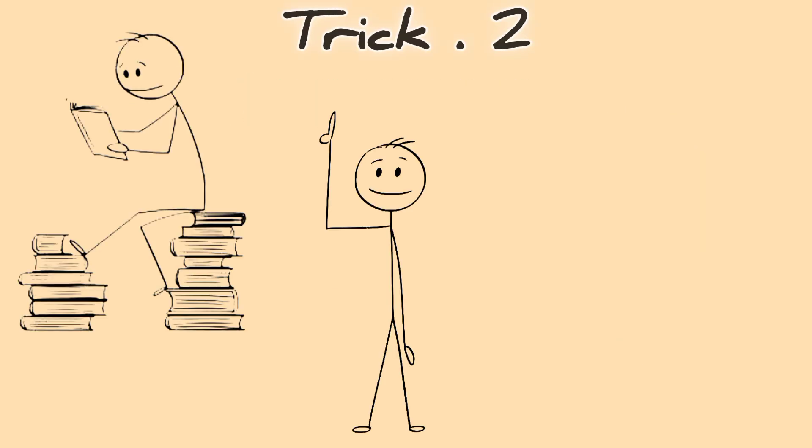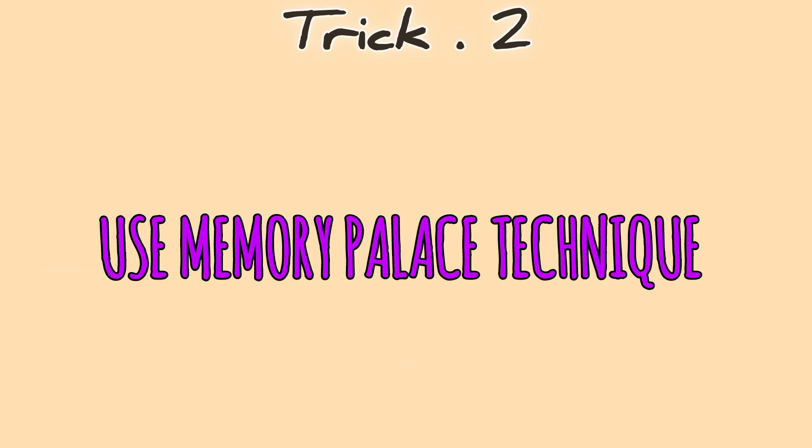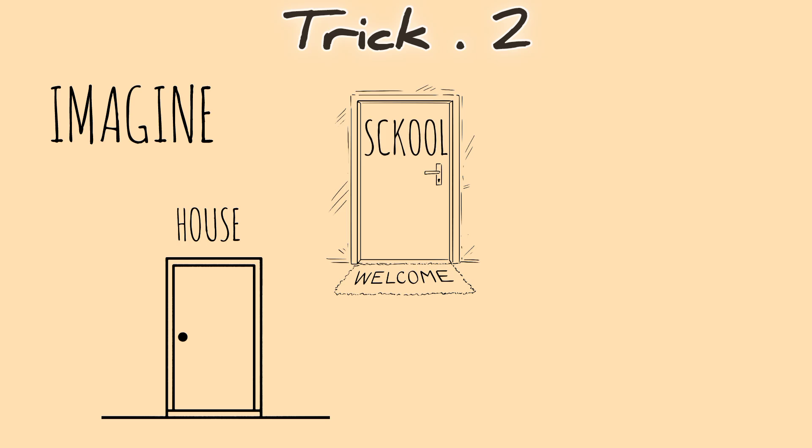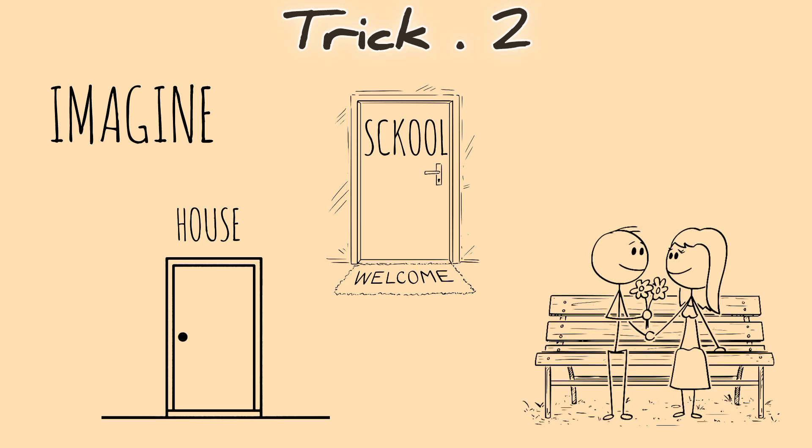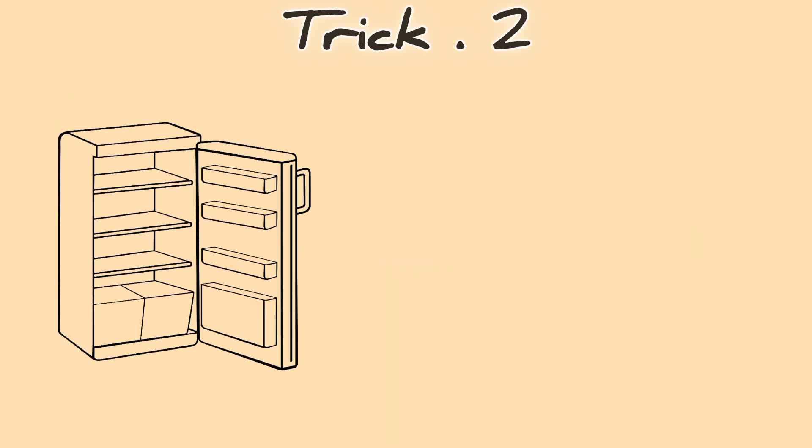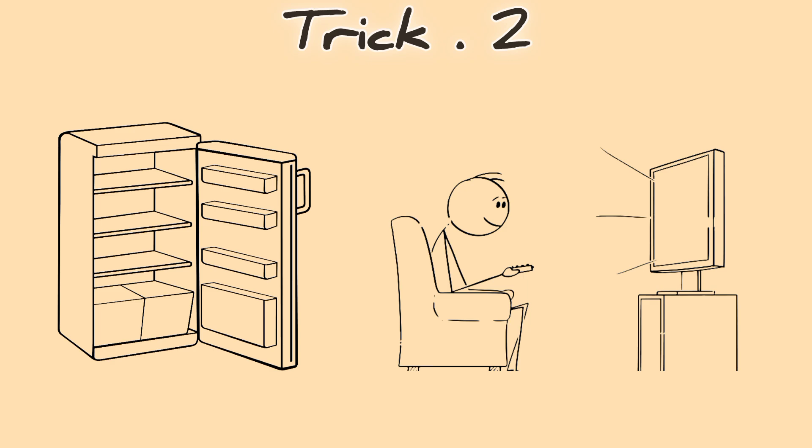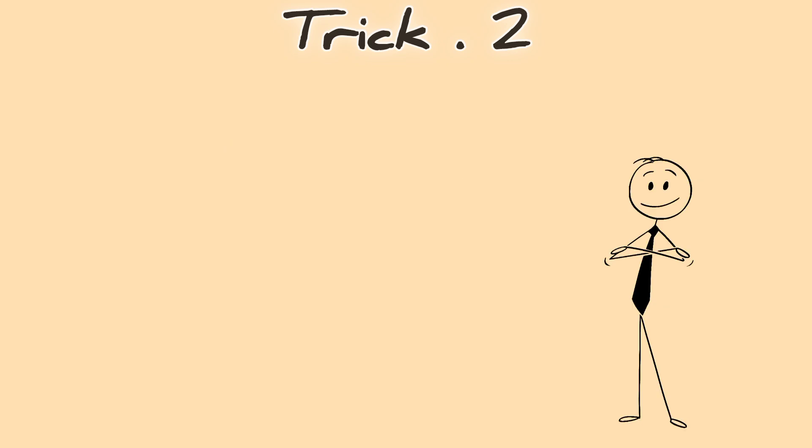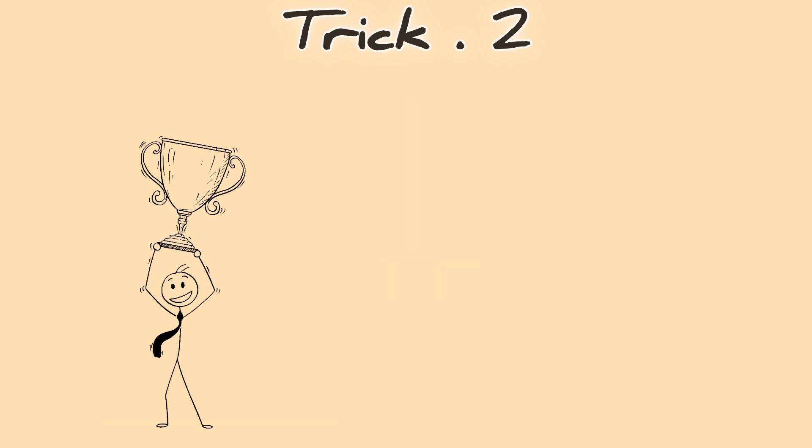Memory Trick 2: The Memory Palace. Want to remember entire books, speeches, or formulas? Use the Memory Palace technique. Here's how it works: imagine a place you know well, your house, your school, or your favorite park. Now, assign each piece of information to a specific spot in that place. Need to remember historical dates? Stick them on the fridge. Math formulas? Place them on the TV screen in your mind. When you mentally walk through your memory palace, every piece of information will be exactly where you left it. This is how some of the world's greatest memory champions memorize hundreds of numbers or entire books in minutes. And the best part? It works for anyone.